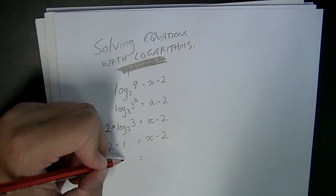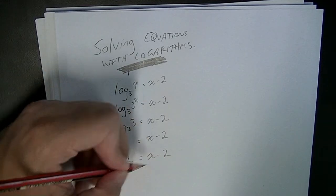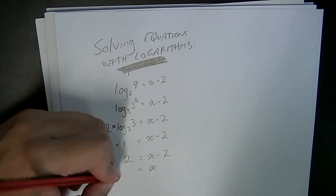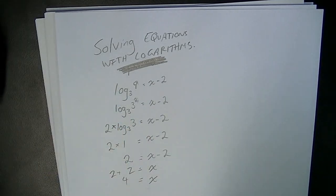Now from here it's pretty straightforward. 2 times 1 is 2, 2 equals x minus 2, x equals, that negative 2 is going to move over here, 2 plus 2, x equals 4.